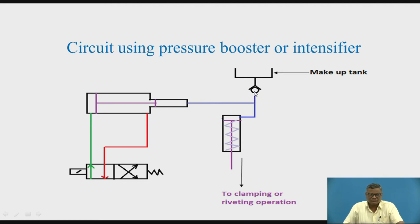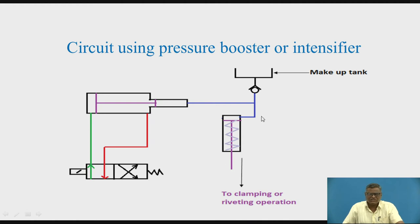The high-pressure oil goes to a check valve — a ball-type structure that allows one-way flow — and then into a single-acting spring-return cylinder. The high-pressure oil exerts a larger force on the piston, applying higher force for the clamping or riveting operation. This is one of the applications of the pressure booster or intensifier in a hydraulic circuit.